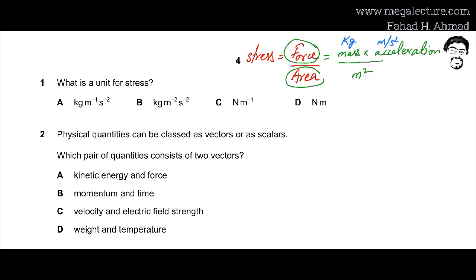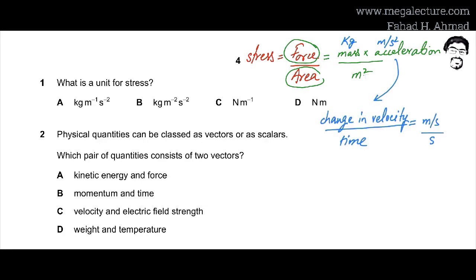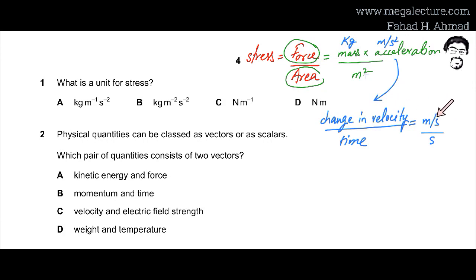Acceleration is change in velocity over time. Velocity is meters per second, so change in velocity with respect to time is meters per second divided by second, which becomes meters per second squared.